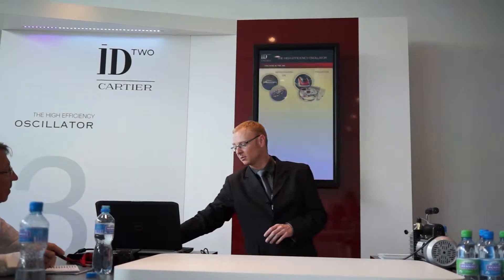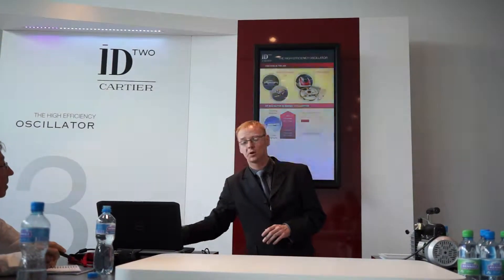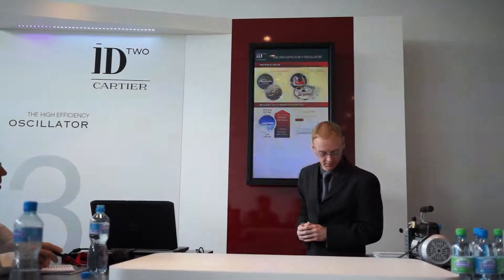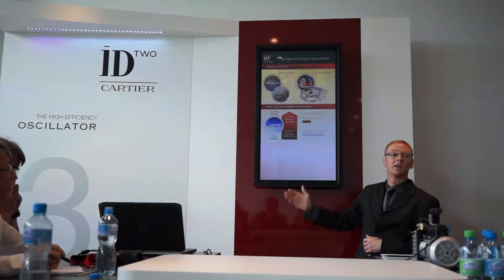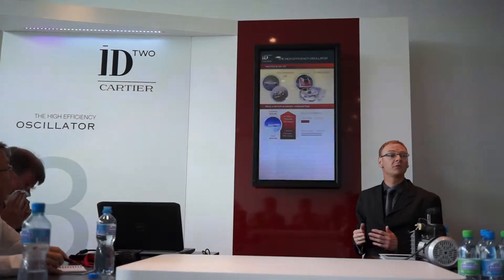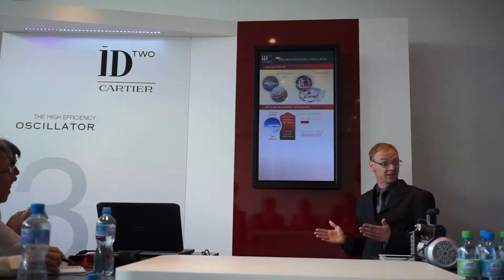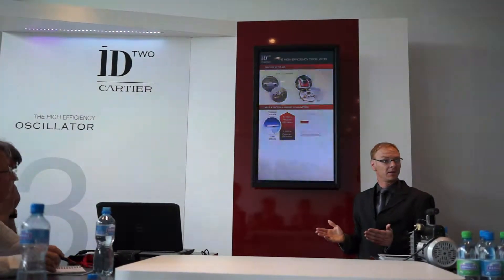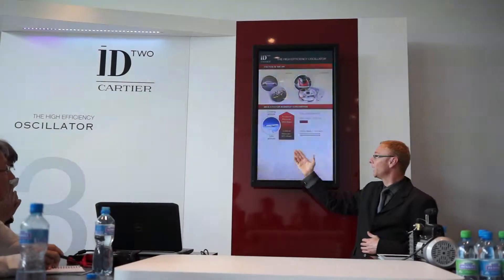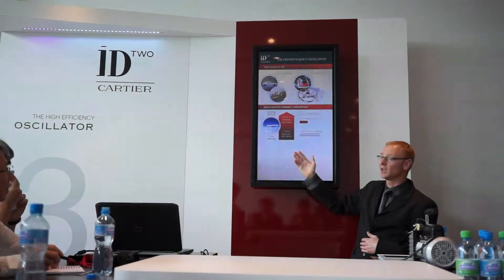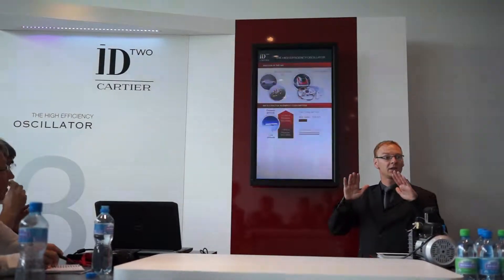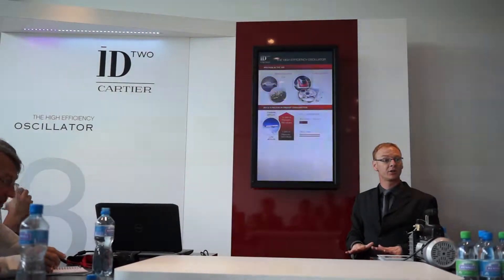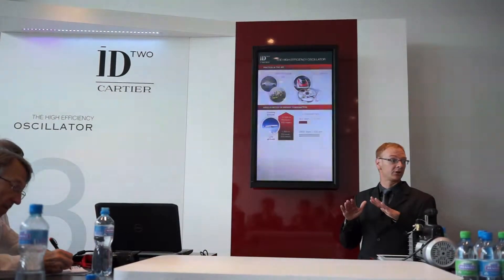As a first example, a plane flying at high altitude consumes 3.5 times less energy than a plane flying at low altitude, because at high altitude the air pressure is lower.